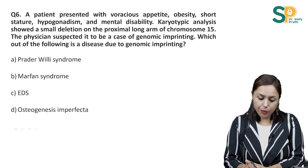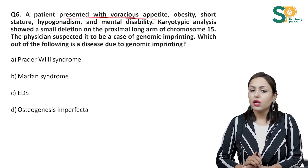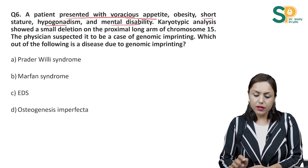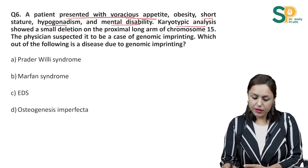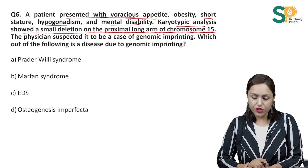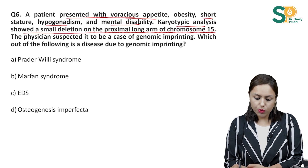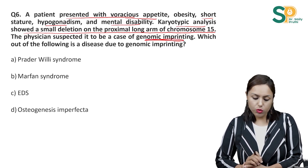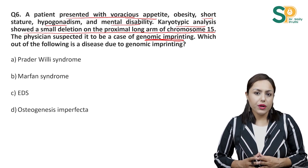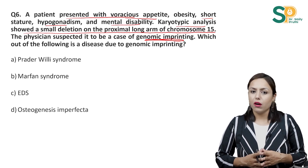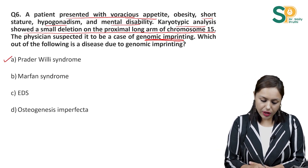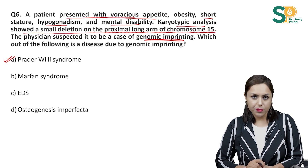Question number 6: A patient presented with voracious appetite, obesity, short stature, hypogonadism, and mental disability. Karyotypic analysis showed a small deletion on the proximal long arm of chromosome 15. The physician suspected a case of genomic imprinting. The diseases of genomic imprinting we commonly read about are Prader-Willi syndrome and Angelman syndrome. Here only Prader-Willi syndrome is given in the option, so that will be the answer.